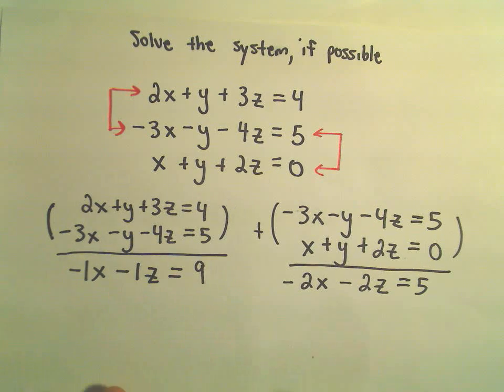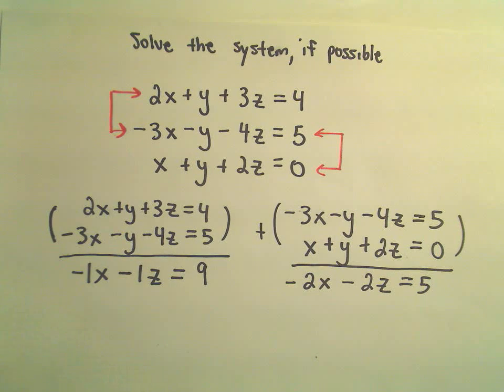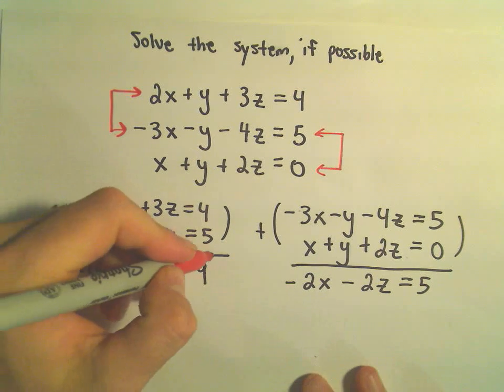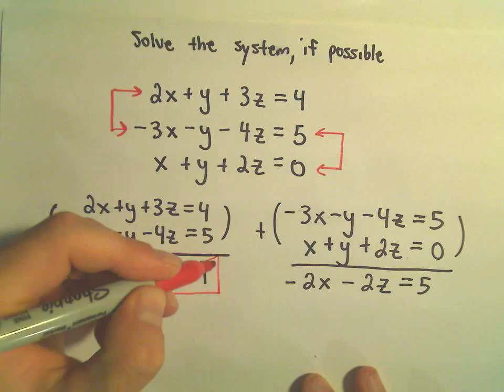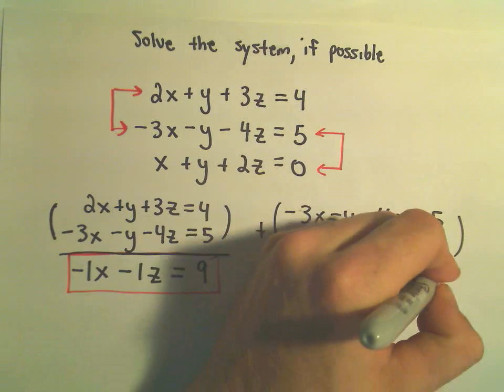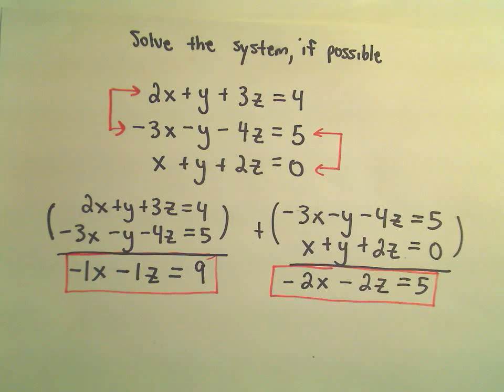And now I'm going to take these two equations that I just produced. And we would try to do elimination by addition to, if possible, reduce it just to a single variable. And then we would be able to solve for that variable.